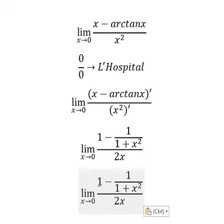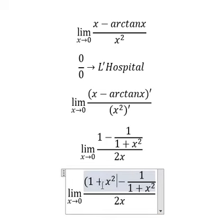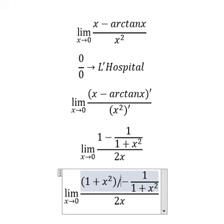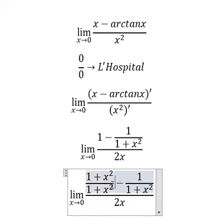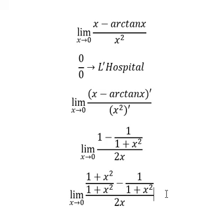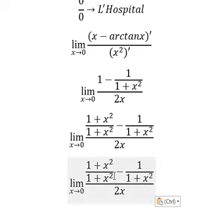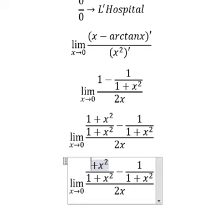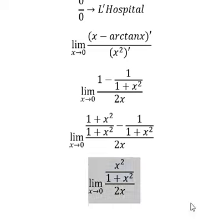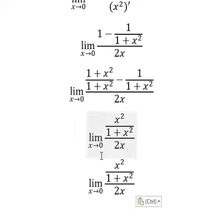And now we can do common denominator with this one. So one minus one, we cancel. And x square divided by x.